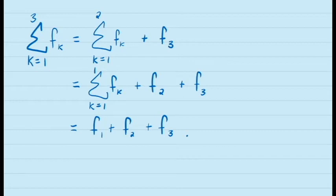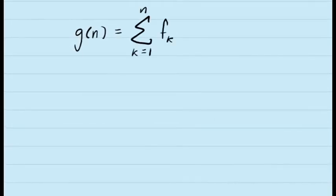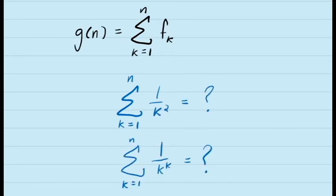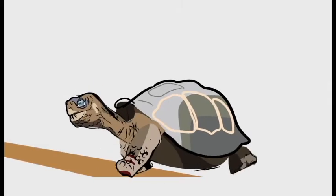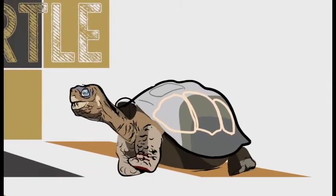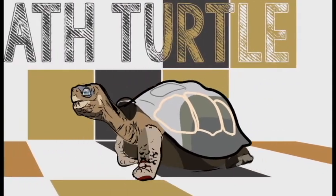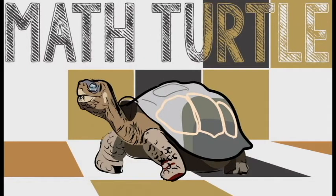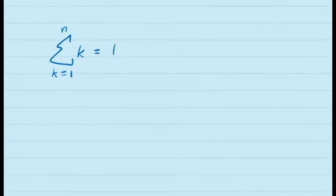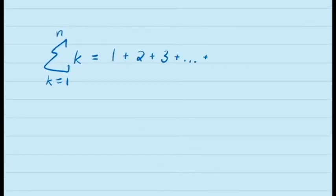One thing we're often interested in is finding a closed formula for the sum of a sequence. In other words, if we want to sum a sequence from 1 up to some natural number n, can we find a formula that expresses this sum simply as a function of n? In some cases this can be very difficult or even impossible, but there are some sequences for which a closed form is fairly easy to find. Let's have a look at a few examples. Consider, for example, the sequence f of k equals k — in other words, f1 is 1, f2 is 2, f3 is 3, and so on. This means the sum from 1 to n would be 1 plus 2 plus 3 and so on up to n. The question is: can we get a closed form for this sum?